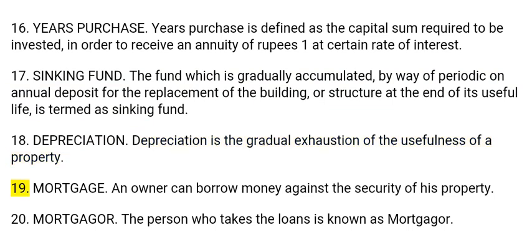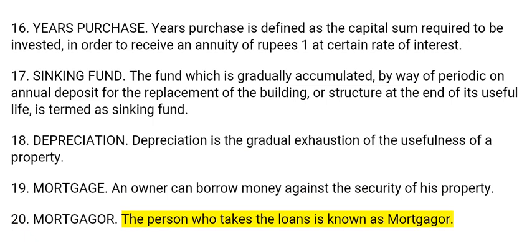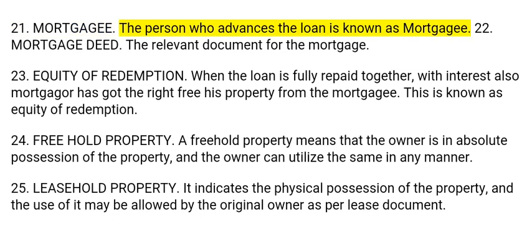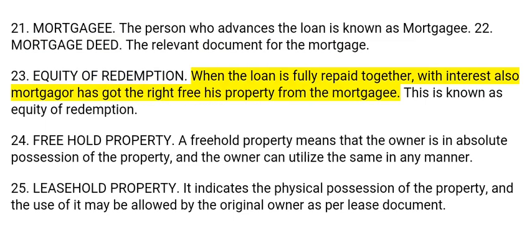19. Mortgage: An owner can borrow money against the security of his property. 20. Mortgager: The person who takes the loan is known as mortgager. 21. Mortgagee: The person who advances the loan is known as mortgagee. 22. Mortgage deed: The legal document for the mortgage. 23. Equity of redemption: When the loan is fully repaid together with the interest, the mortgager has got the right to free his property from the mortgagee. This is known as equity of redemption.